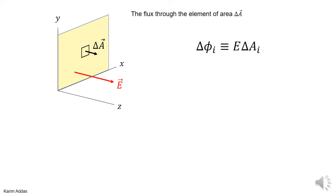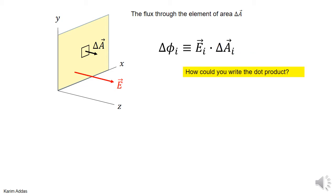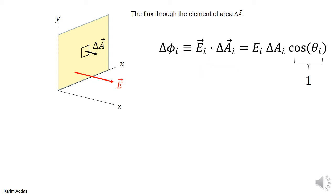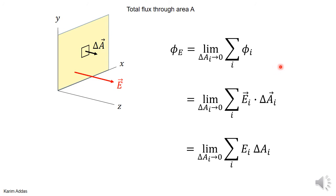You can get the same result a slightly different way: the flux through the ith element is E dotted into the area, and the dot product of any two vectors equals the magnitude of the first times the magnitude of the second times the cosine of the angle between them. Since the angle between the area vector and the electric field vector is zero, cosine of zero is one, so you get the same result — the electric flux is simply E times the area.